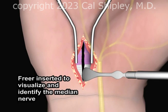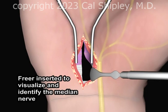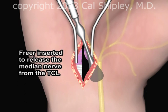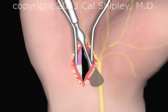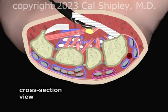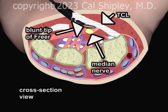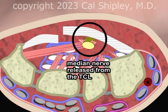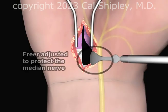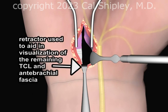A freer elevator is used to ascertain the precise location of the median nerve. The freer elevator is then reinserted to protect the median nerve so that the remaining portion of the transverse carpal ligament and a portion of the anti-brachial fascia can be opened.